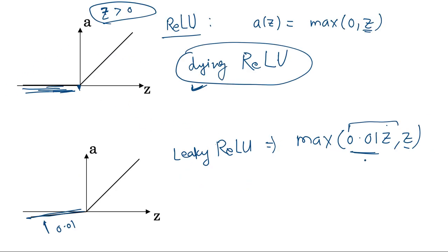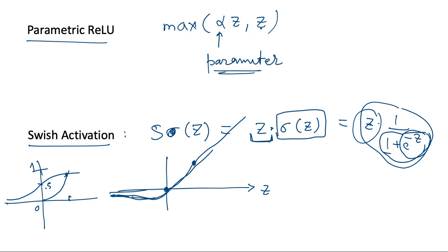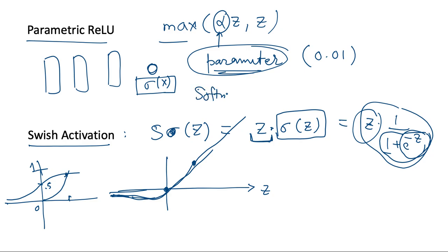We also have Parametric ReLU, defined as max(α·z, z), where alpha is a learnable parameter rather than a fixed value like 0.01 in Leaky ReLU. As a recommendation, use ReLU or one of its variants for hidden layers by default unless you have a specific requirement. For the output layer, use sigmoid for binary classification, or softmax for multi-class classification, which is another activation function designed for more than two classes.